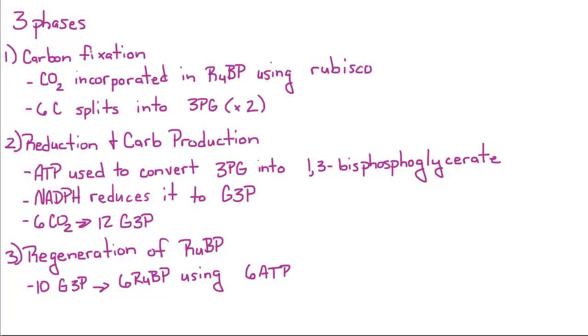The last step is the regeneration of ribulose bisphosphate. Ten molecules of glyceraldehyde-3-phosphate combine with six molecules of ATP to produce six molecules of ribulose bisphosphate.